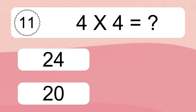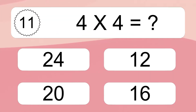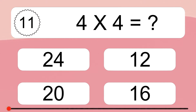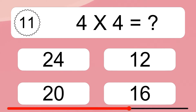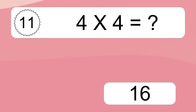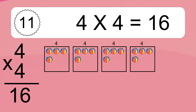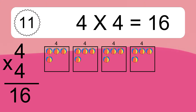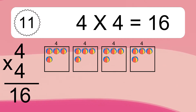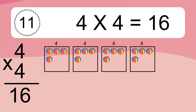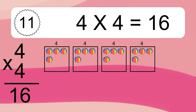4 times 4 equals what? 4 times 4 equals 16. We have 4 boxes, and each box has 4 colorful balls inside. If you count all the balls in all the boxes together, you will have 4 times 4 balls. This equals 16 balls.